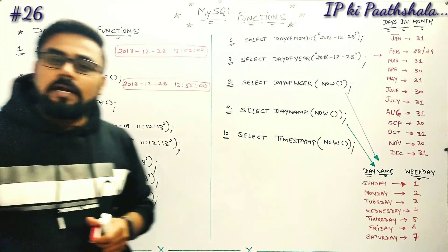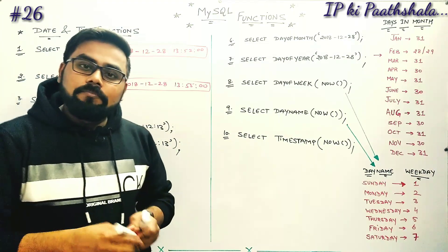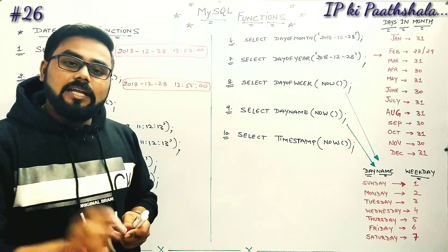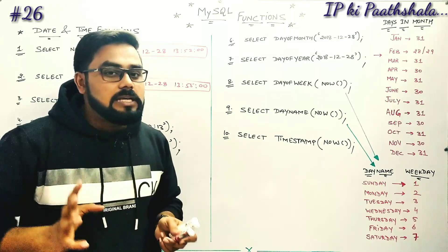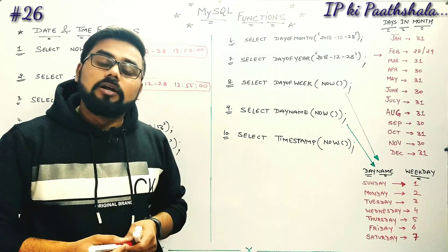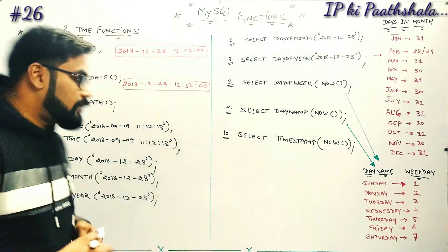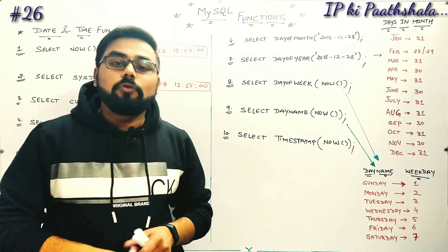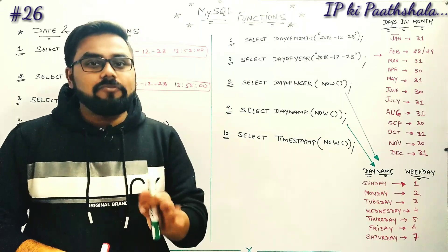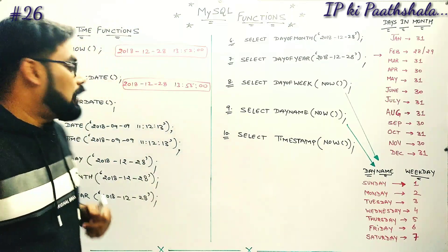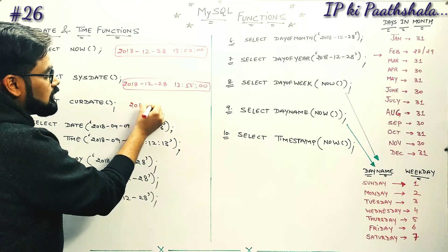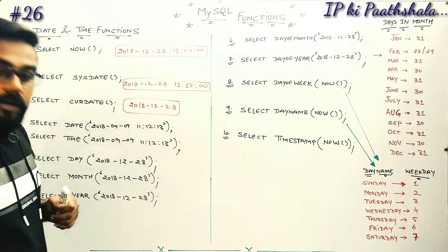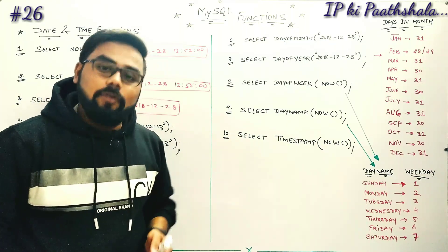The format for SysDate is: year, then month, then day, hours, minutes, and time. For dates we use hyphens, and for time we use colon operators. Our next function is SELECT CURRENT_DATE(). Current date is the short abbreviation used for current date. Our answer here is just the date portion — 2018-12-28 — which solves our current date function, showing only the date without the time.